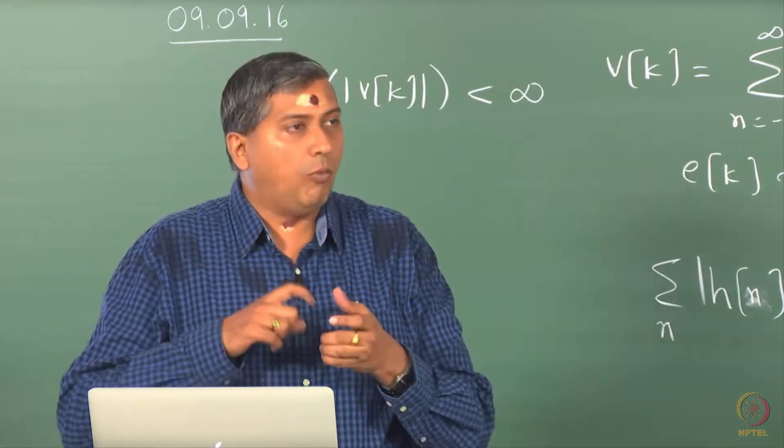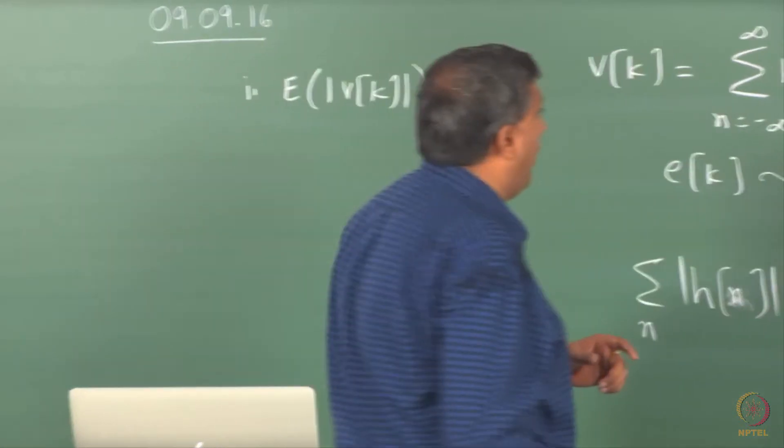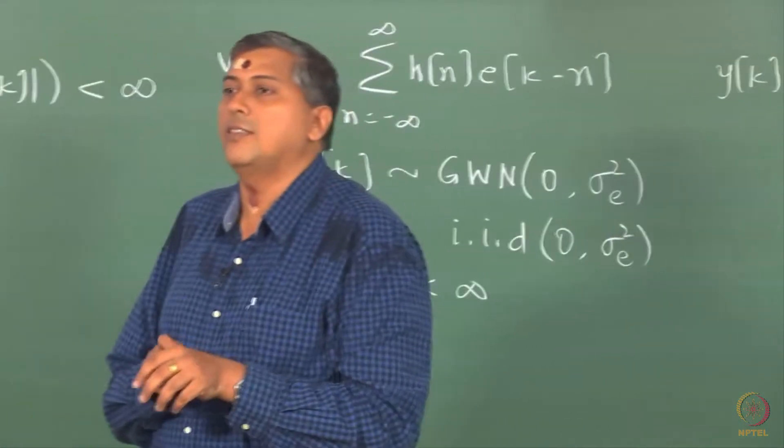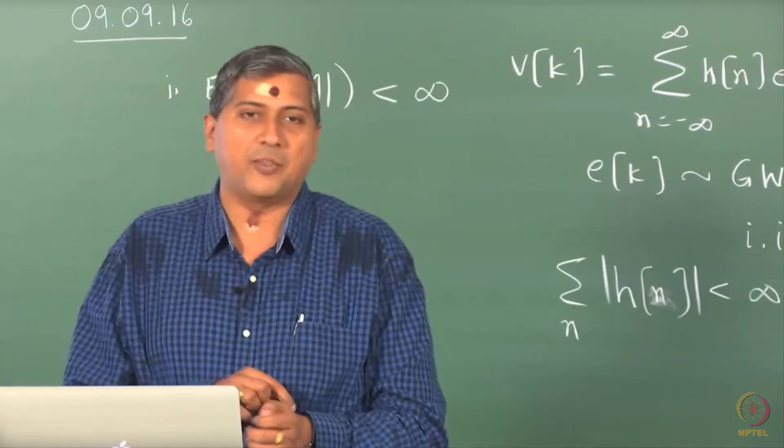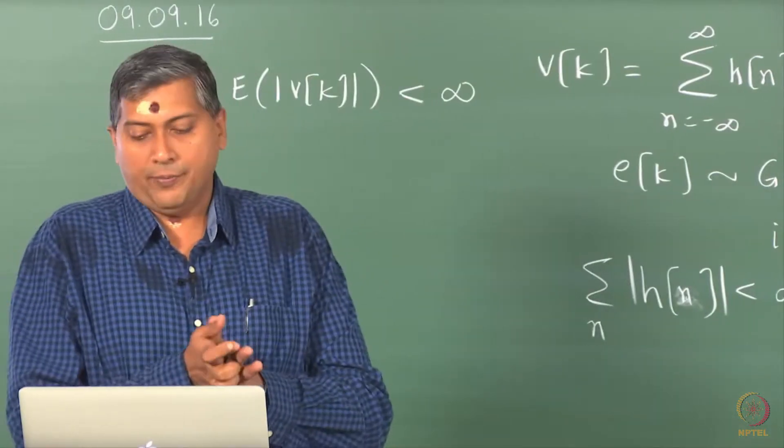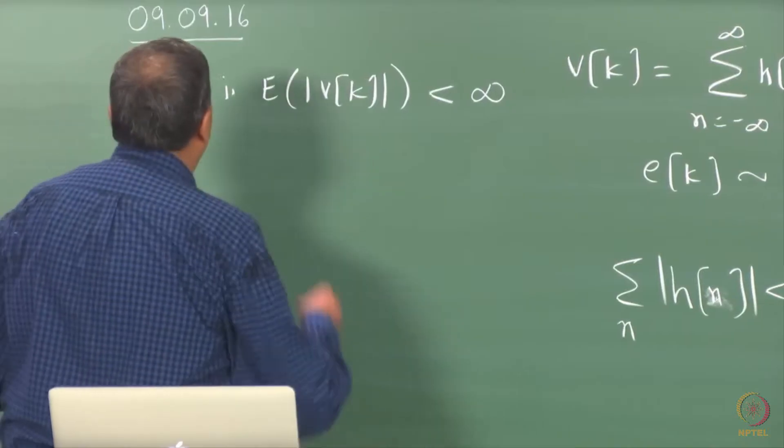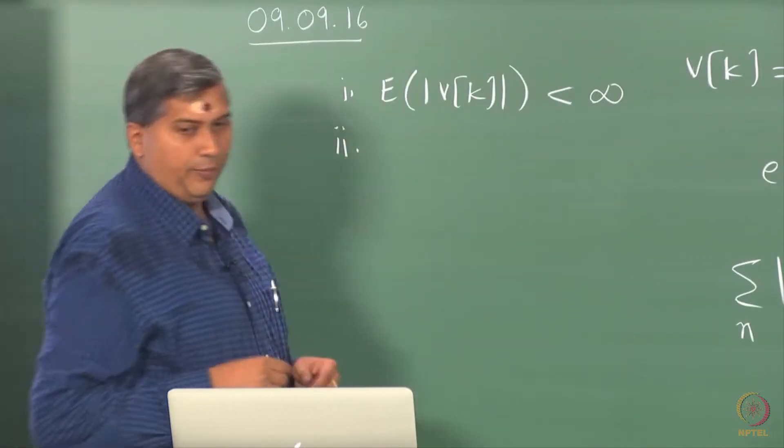In fact, that is also the way that one proves boundedness of Vk in the deterministic world. The only difference is in the deterministic world, we do not take expectations, alright? So we will not prove that. This proof is available in many texts including the book by Brockwell and Davis and so on.